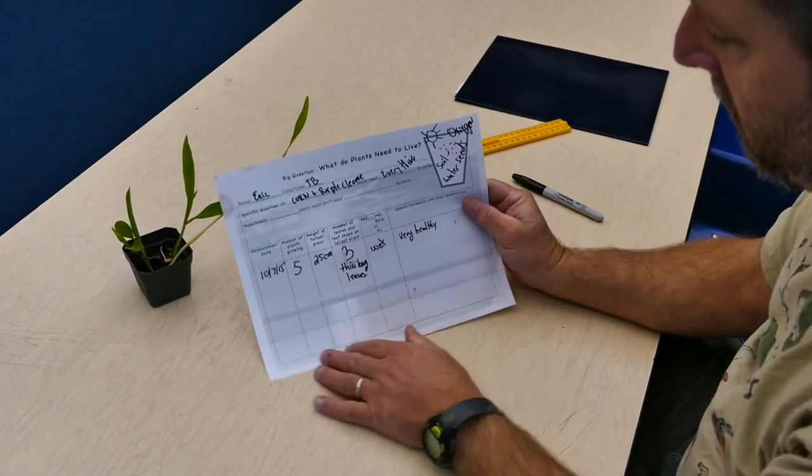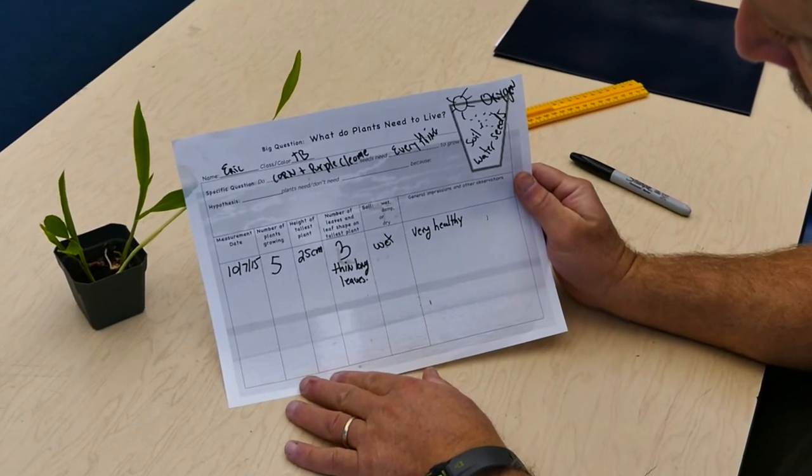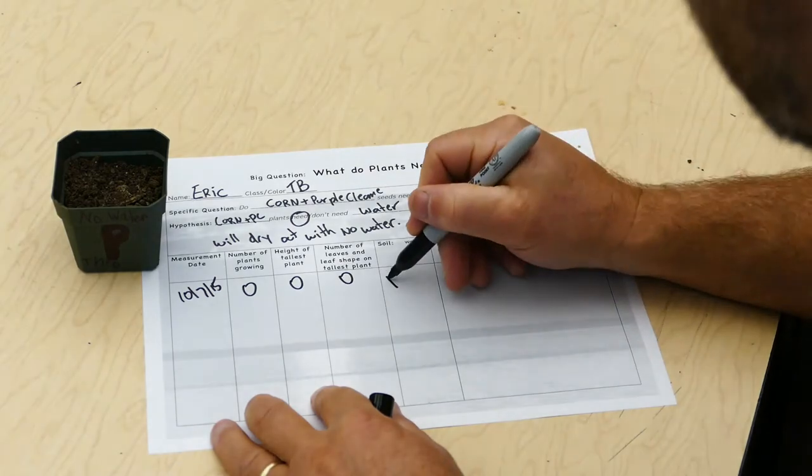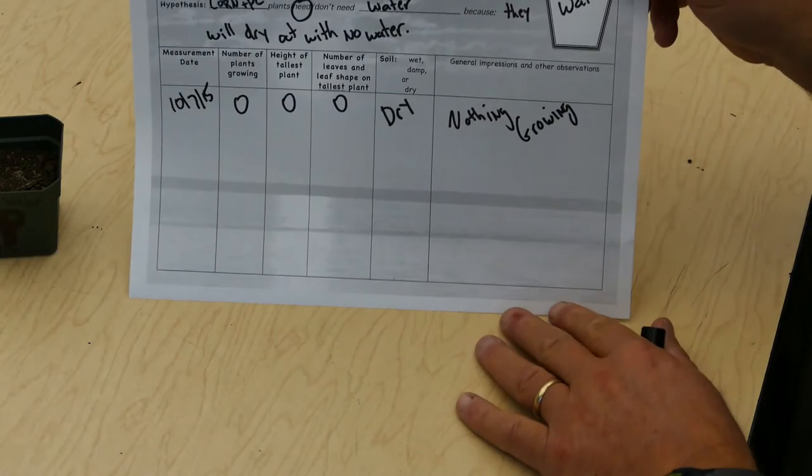After you've done your measuring, record the other information about your plant. Read the data sheet, fill in each column, ask for help if you need some help.